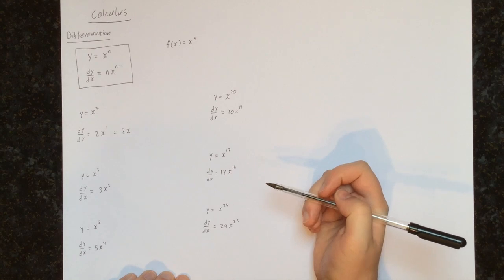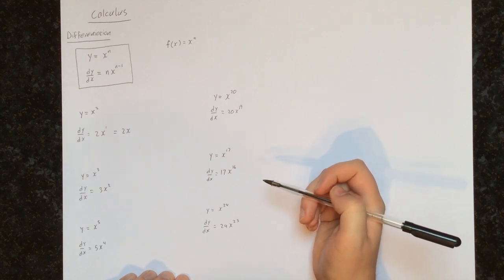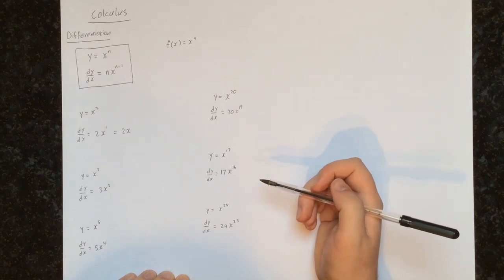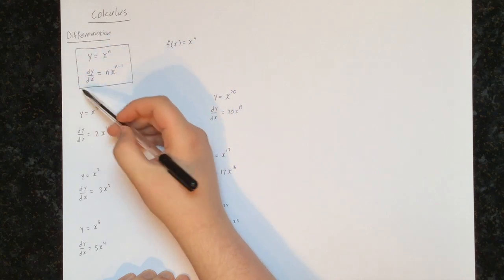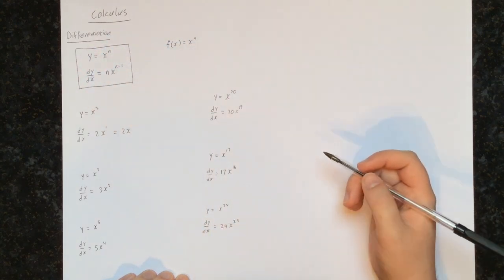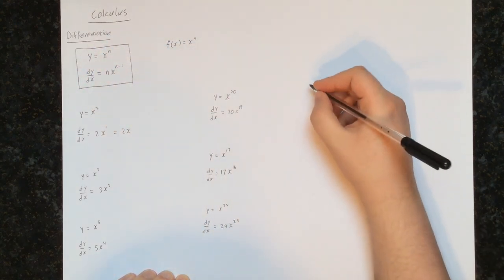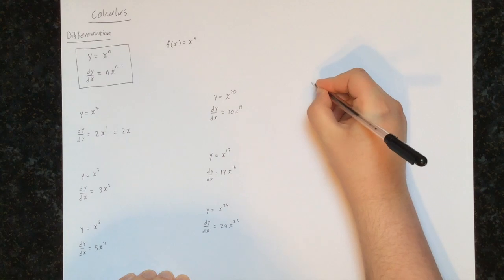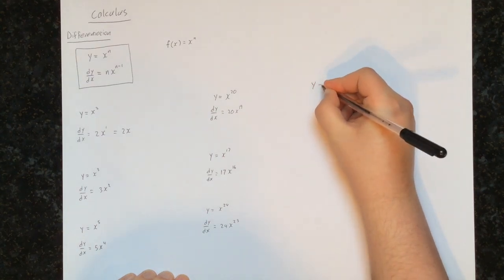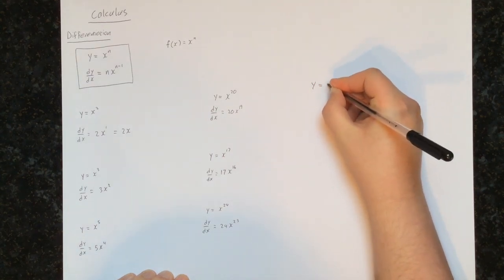We're not going to worry about exactly what the derivative is right now — we will come to that later. On the higher level course we will prove exactly why this formula works, but on the ordinary level course you don't need to know why it works, you just need to know that it works. Let's keep going through examples.